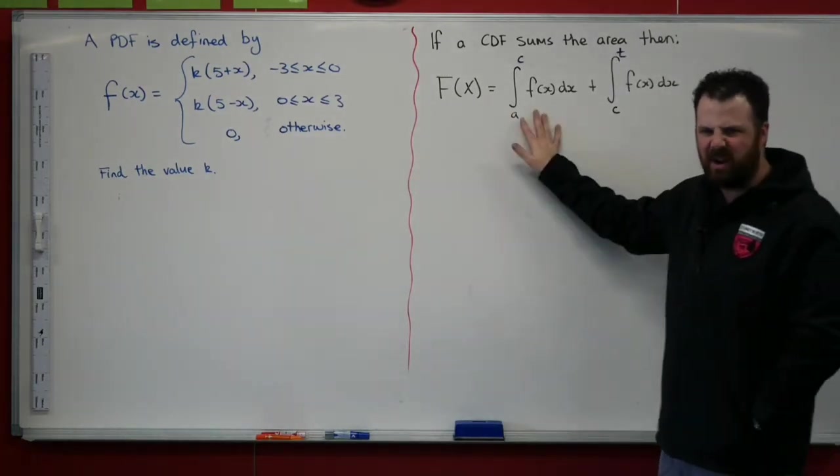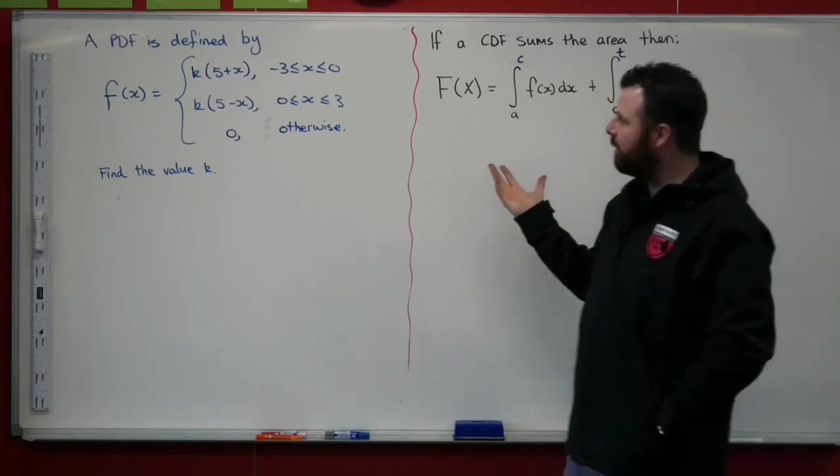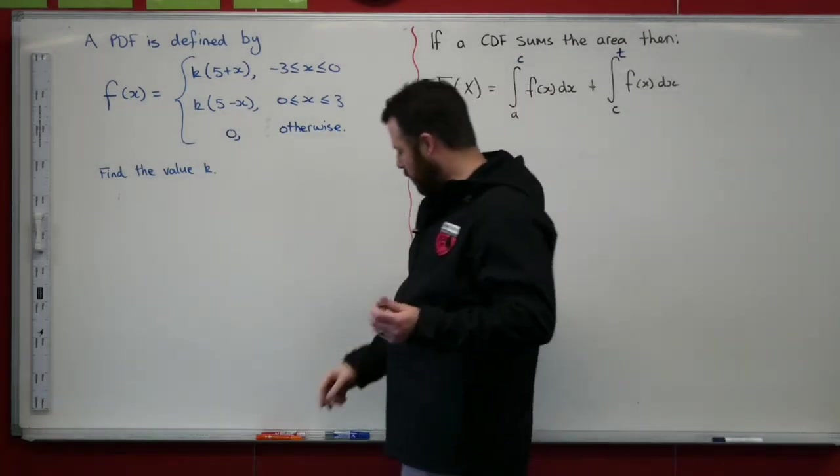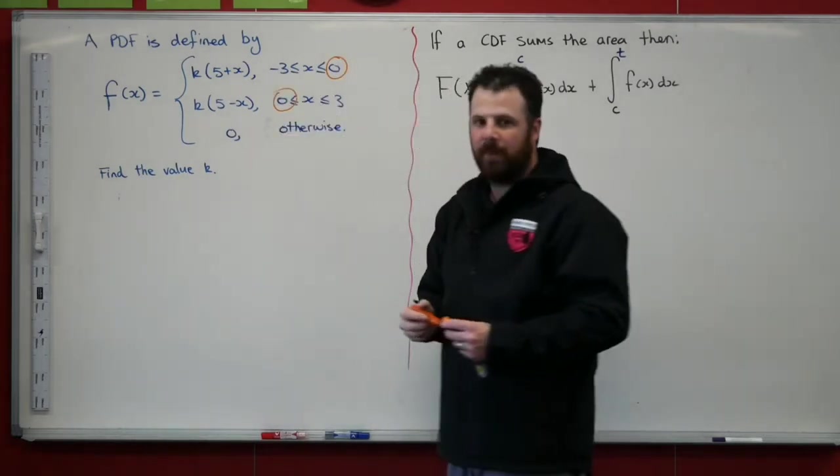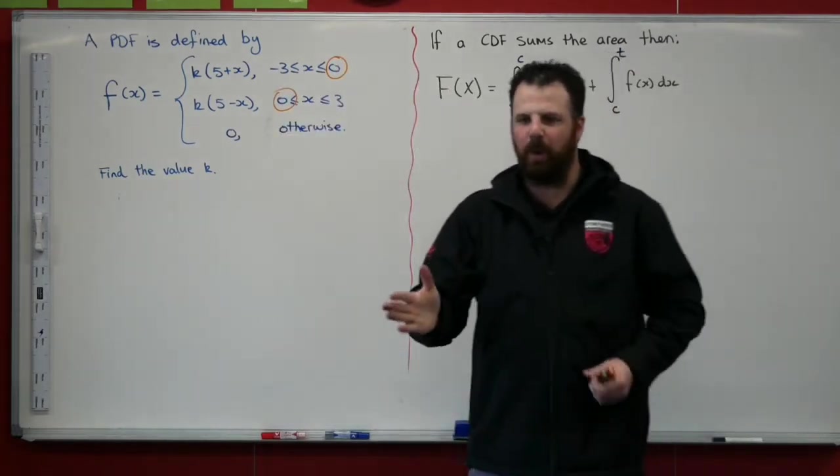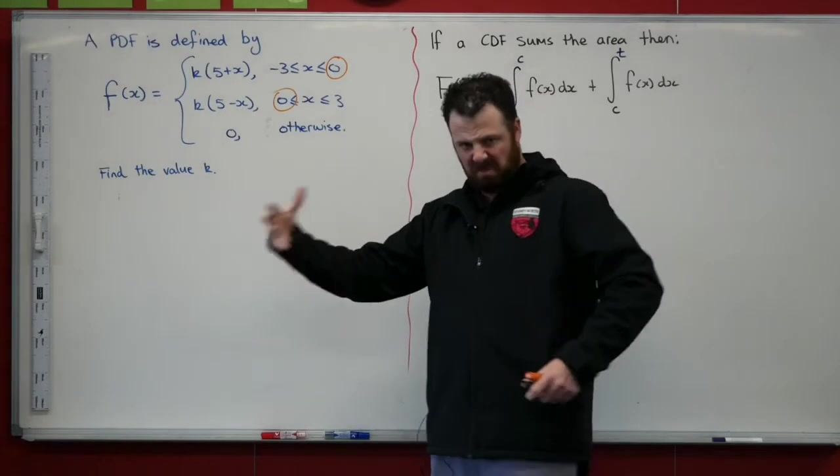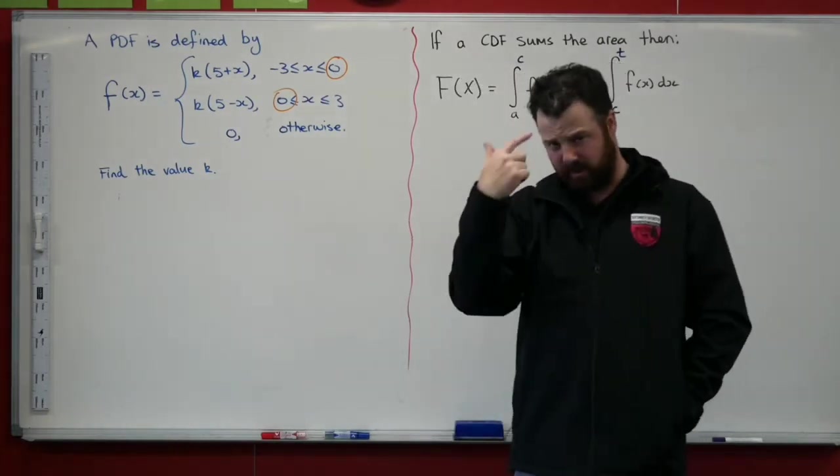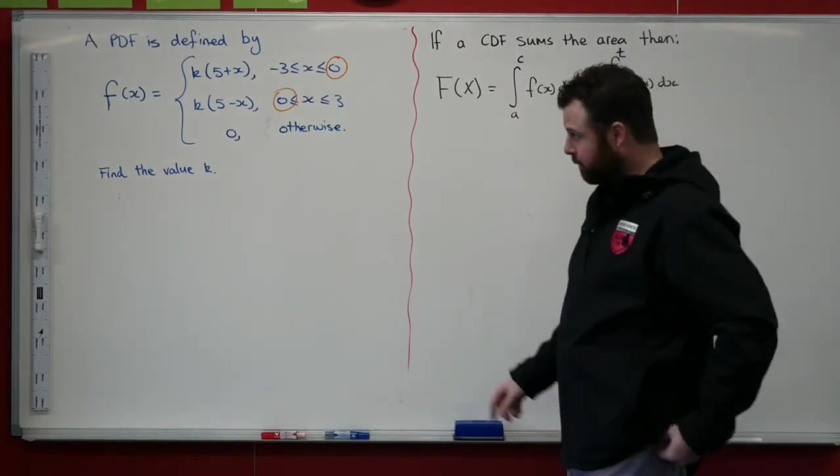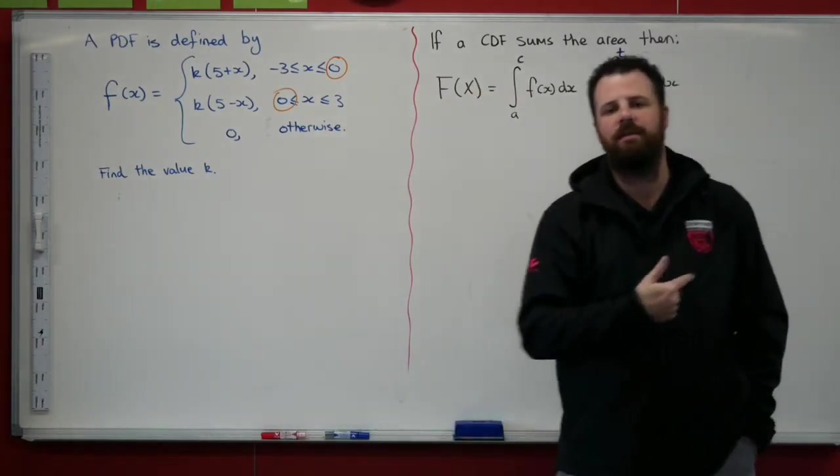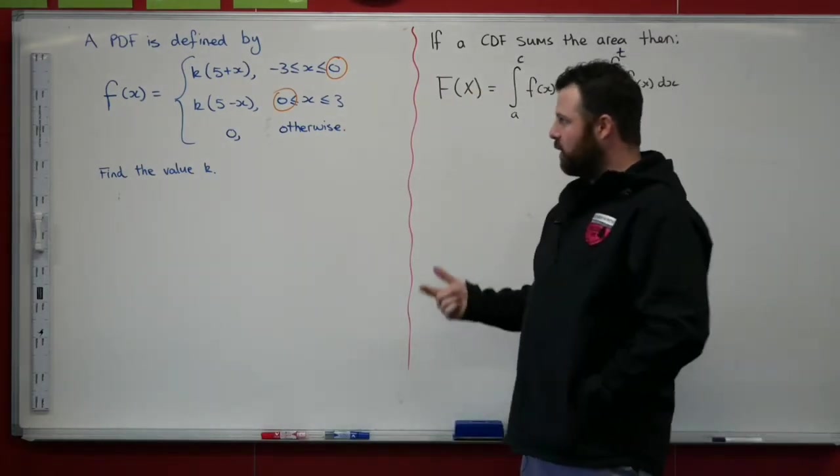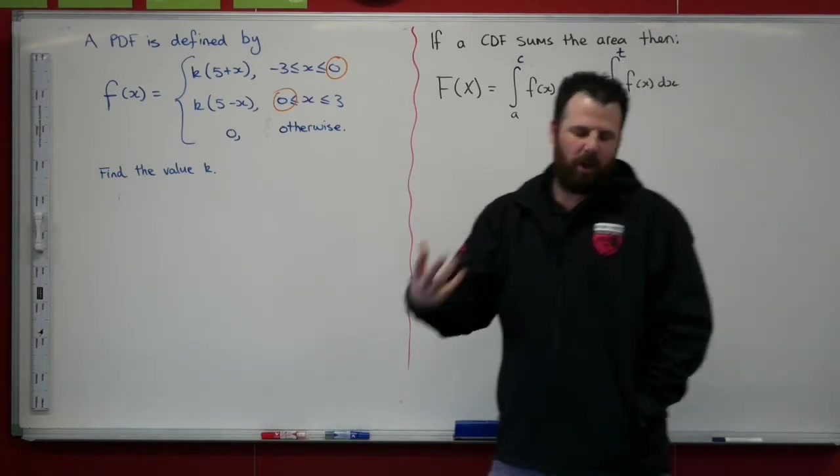So that means this is where this example comes in. We're going to have two areas that we need to calculate. And if we have a look, what we can identify here is that 0, that's our boundary. That's our point where we shift from one function to the next function. So we've got to take that on board. The first part of this example asks you to find the value of k. So let's go through and do that.